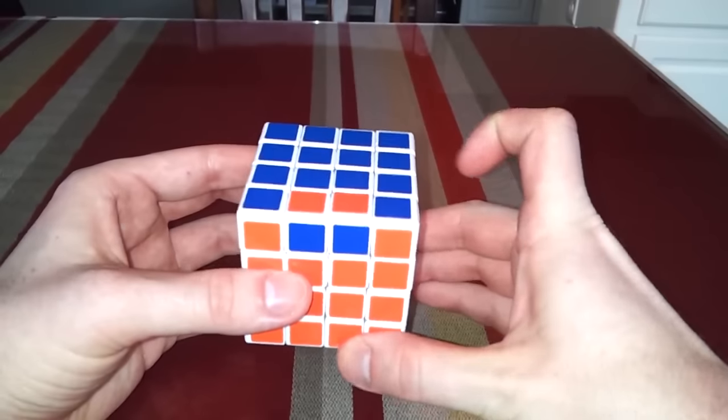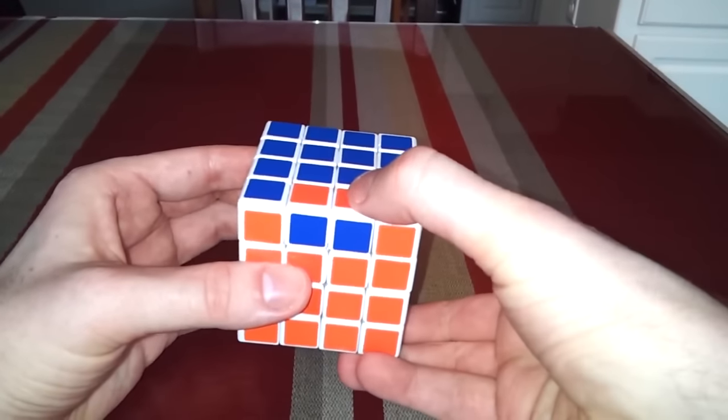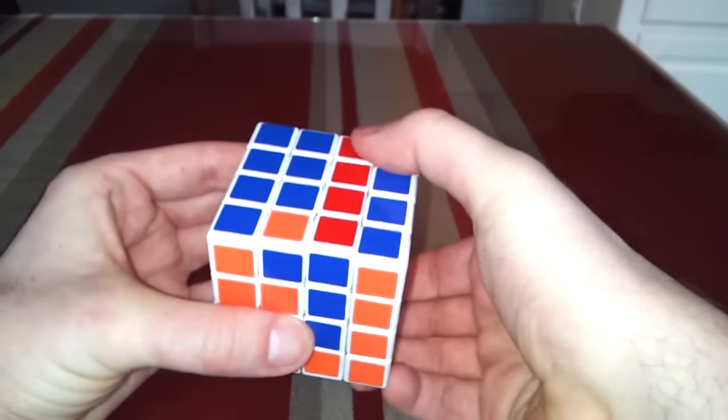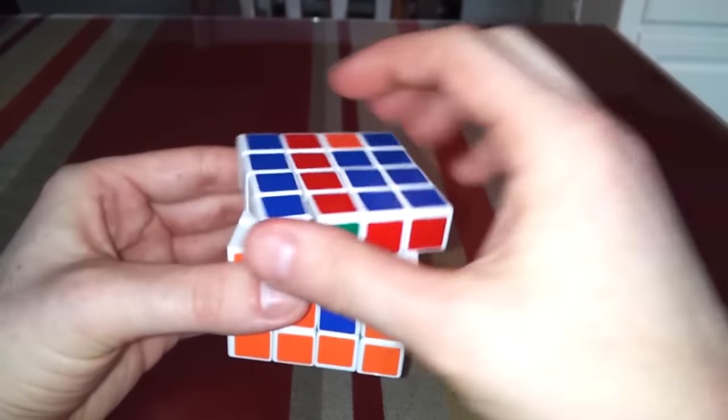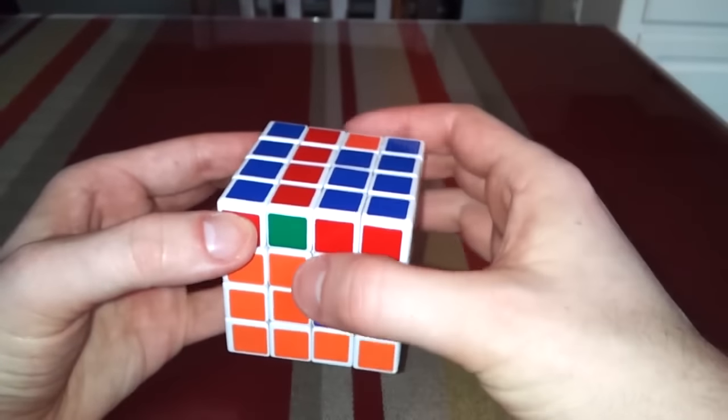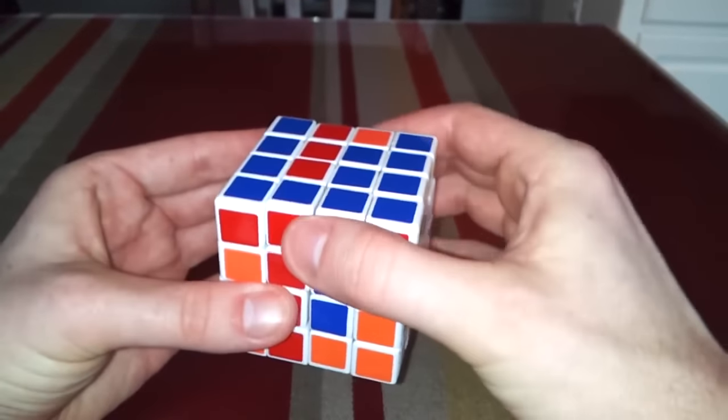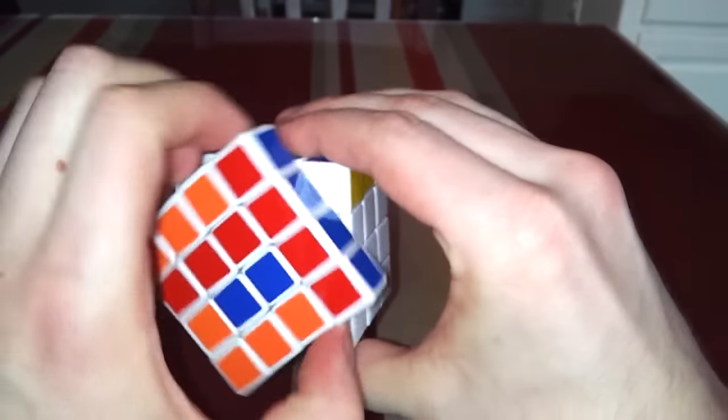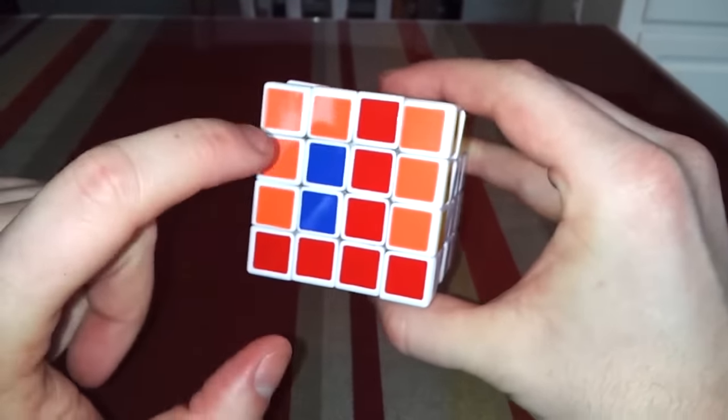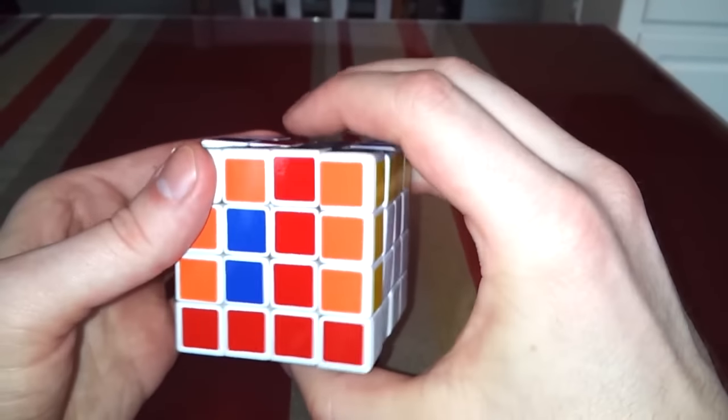So the first step is going to be to bring this layer down, down. Then we're going to spin the top twice. And then we're going to bring this layer down one. Then we're going to spin this front layer twice, one, two.